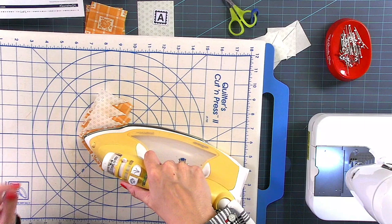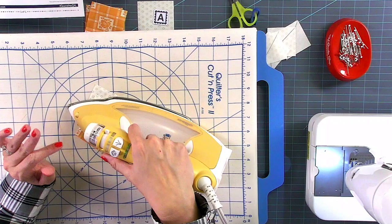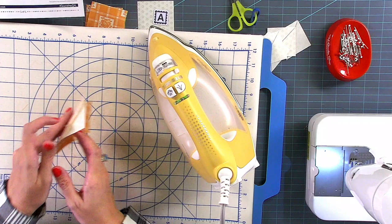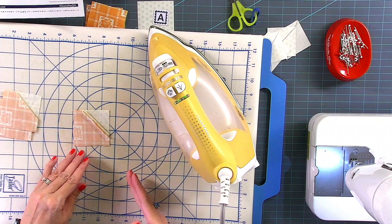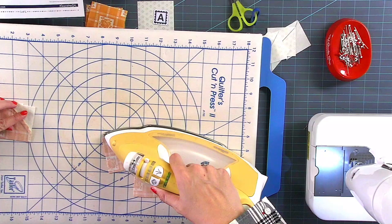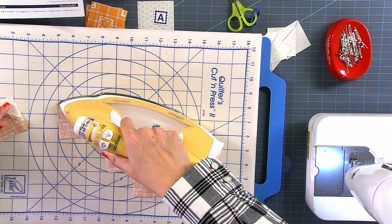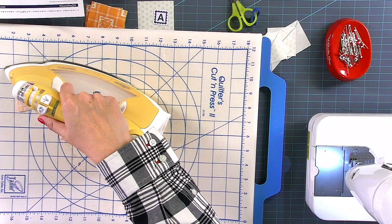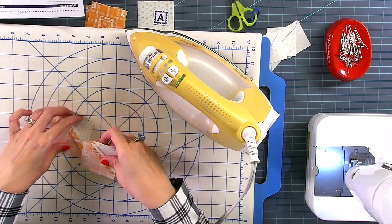So when I press, I press down to set the seam. It locks your stitches. Then I'm pressing to one side. You can leave yours like this if you would like to. I will be pressing mine open. So I will turn mine over, finger press, and I'm going to try to do them all in a line. And I'm not lifting the iron up and down, which also saves time. And there you go. They're all done.